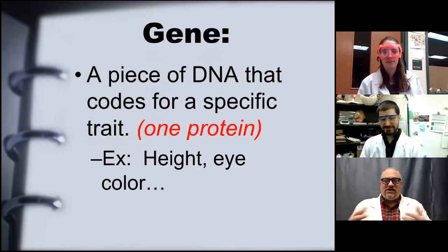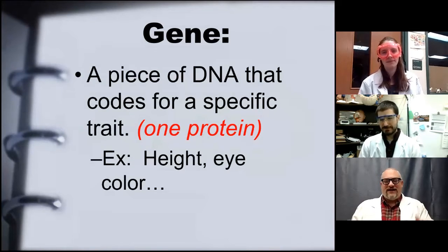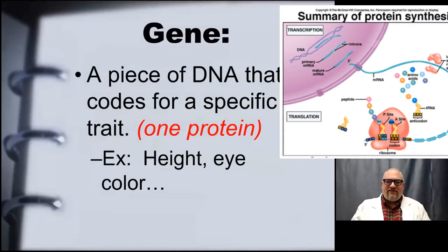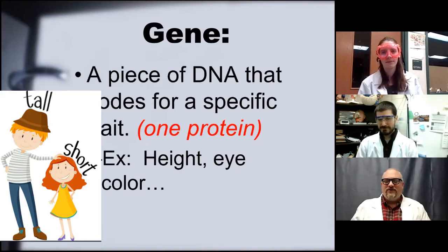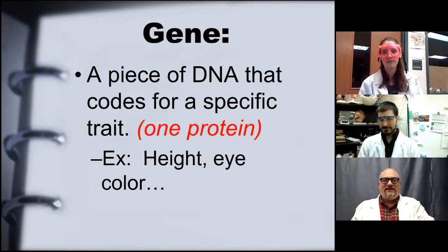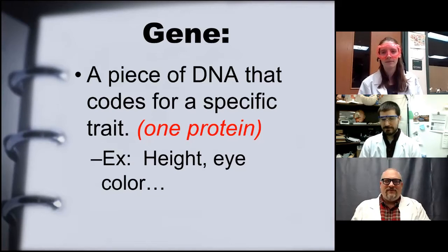The first term to talk about is gene — and we're talking about genes on DNA, not the jeans on the lower half of your body. Simply put, a gene is a piece of DNA that codes for a specific trait. Traits are things like height, eye color, the ability to digest lactose in milk, or the ability to make certain antibodies to diseases.